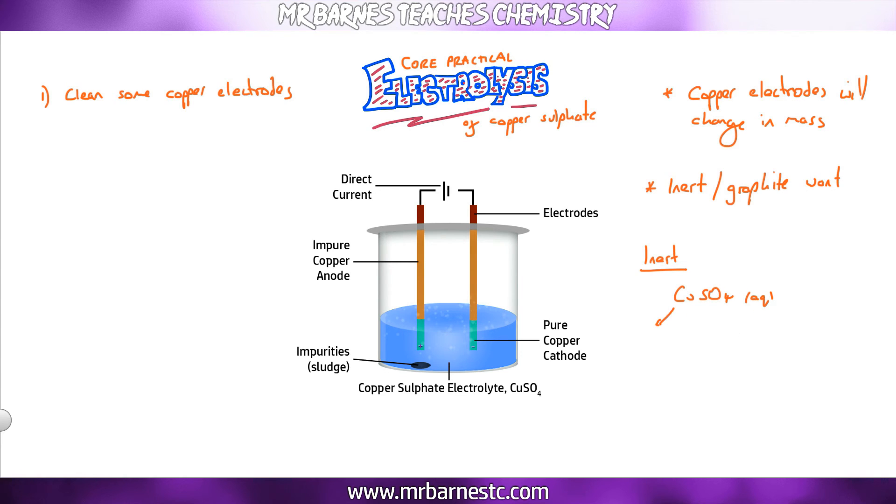If you were to use inert or graphite electrodes, they won't take part in the reaction. Because they don't change in mass, normal electrolysis occurs. You've got copper 2+ ions, H+ ions, SO4 2- ions, and OH- ions. Copper is less reactive, so that will form at your cathode, and at your anode there's no halide, so you'll get oxygen and water forming. But we're talking about using copper electrodes, so let's forget all that.